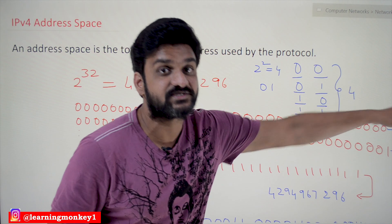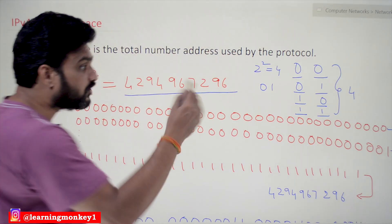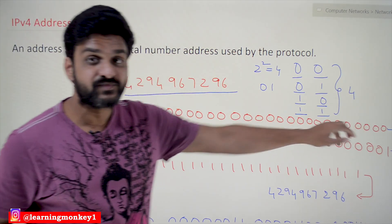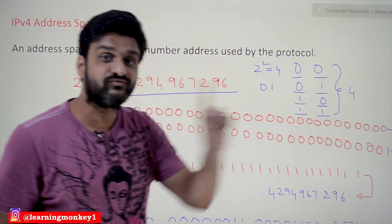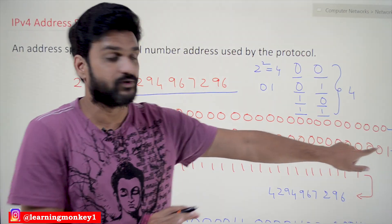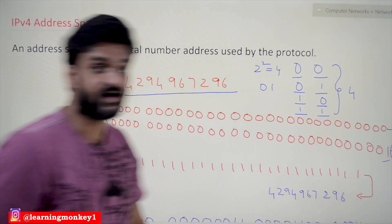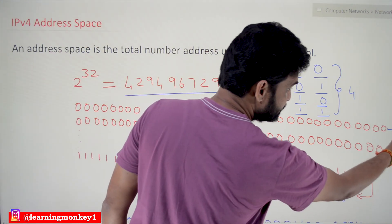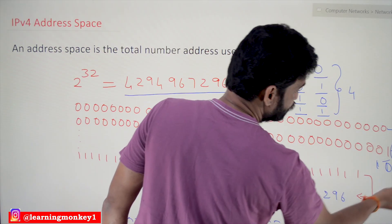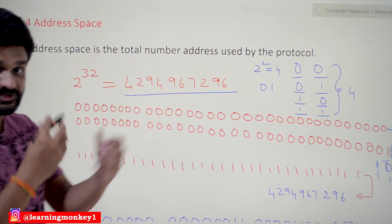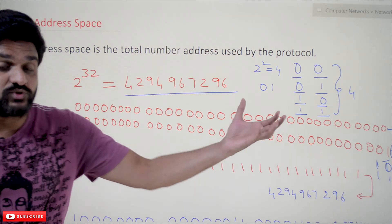With 32 bits, how many unique values are possible? The answer is 2 to the power of 32. How are these represented? All 32 zeros represent one IP address, which is zero in decimal. The next is with the last bit as one, which is one in decimal. Then one-zero at the end gives two, and one-one gives three.